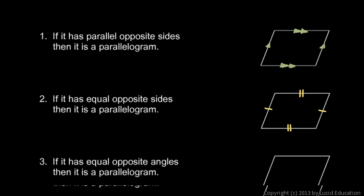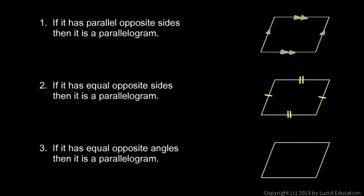Number three: if it has equal opposite angles, then it is a parallelogram. So if this angle is equal to this one and this angle is equal to this one, from that we can conclude that it is a parallelogram, and we will prove that in just a moment.